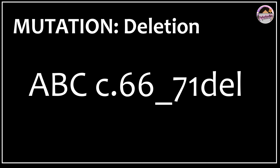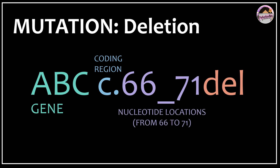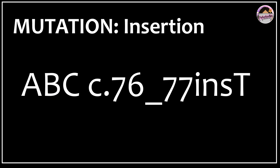Now let's look at a deletion mutation. Take the ABC gene with the notation c.66_71del. 'ABC' is the gene name; 'c' stands for coding region; nucleotide locations 66 to 71 are specified; and 'del' indicates a deletion. So nucleotides from the 66th to the 71st position have been deleted.